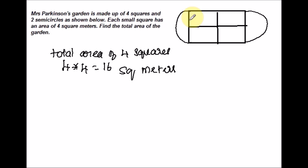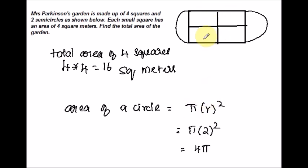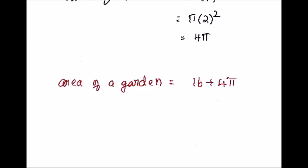Two semicircles together make one whole circle, so their combined area is pi r squared where r = 2, giving 4 pi square meters. The total area of the garden is the area of the four squares plus the area of the two semicircles: 16 + 4 pi. You can leave the answer in terms of pi, or replace pi with 3.14 to get approximately 28.56 square meters.